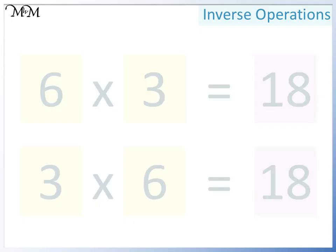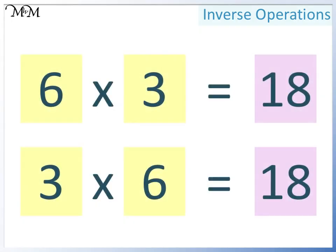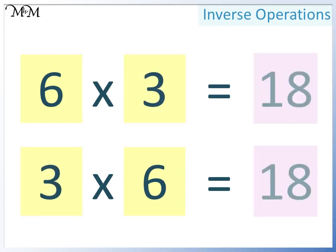The two calculations that we have are 6 times 3 equals 18 and 3 times 6 equals 18. As long as we have two smaller numbers multiplying together to make a larger number, the order of the two smaller numbers doesn't matter.